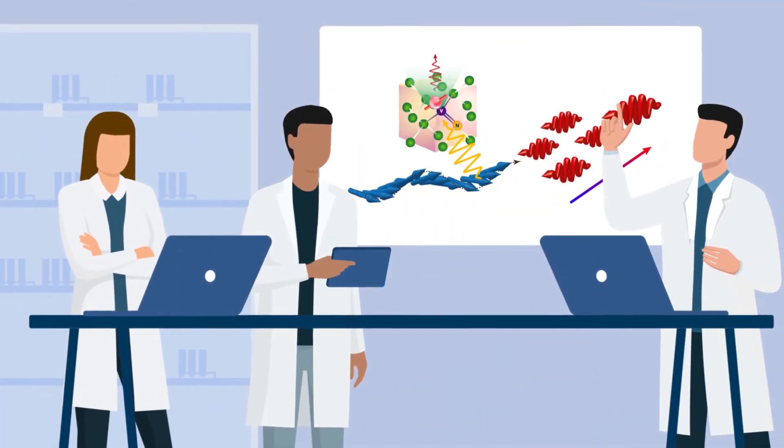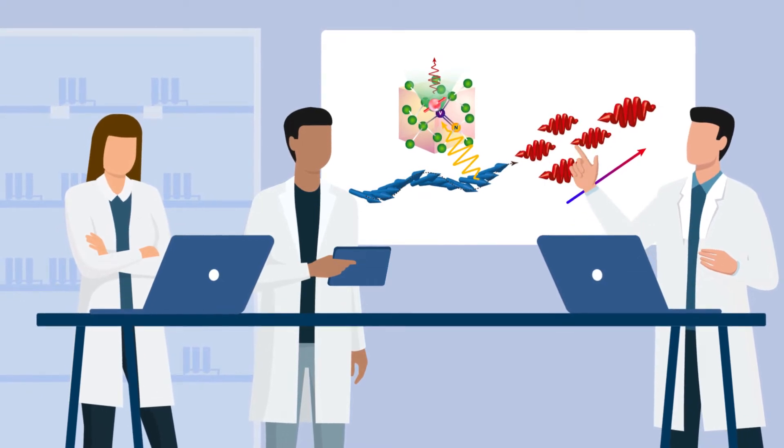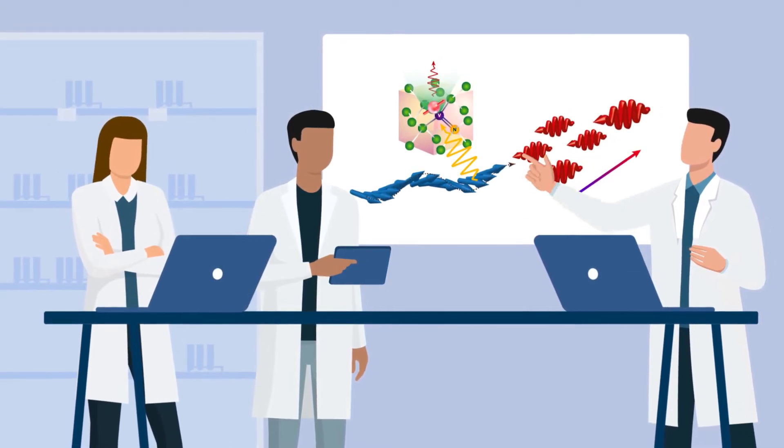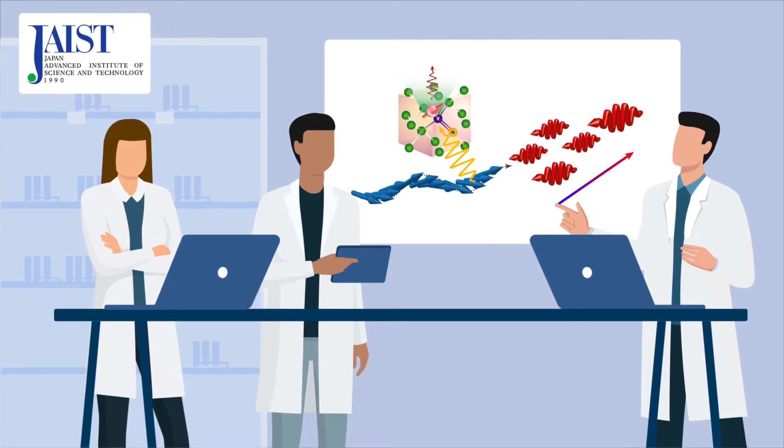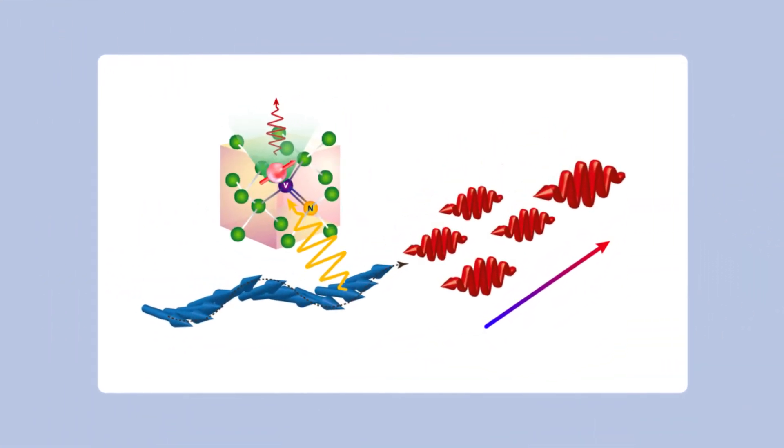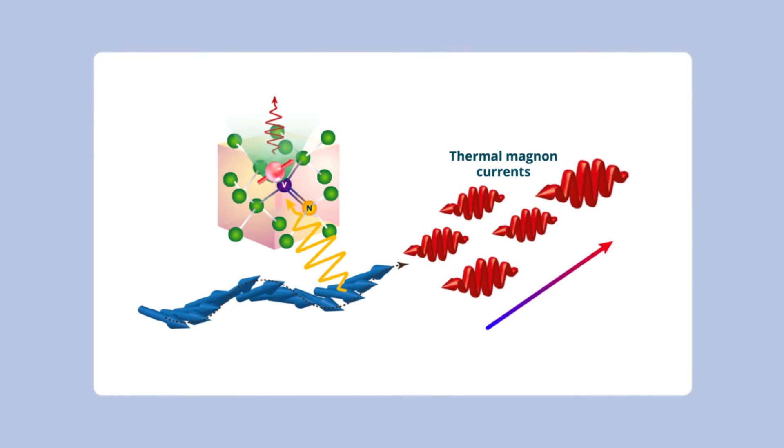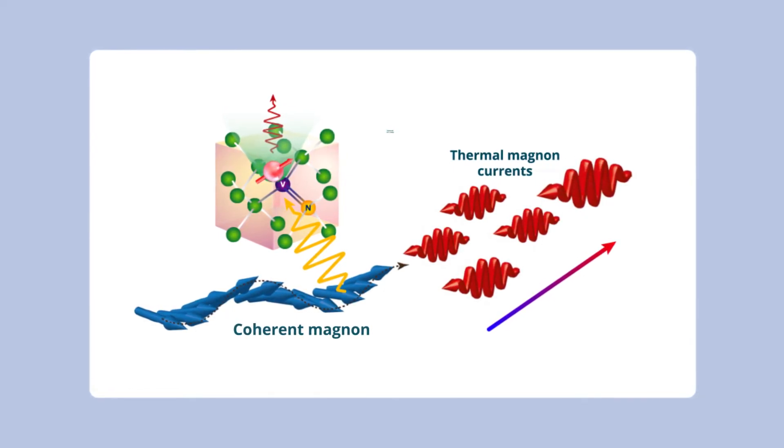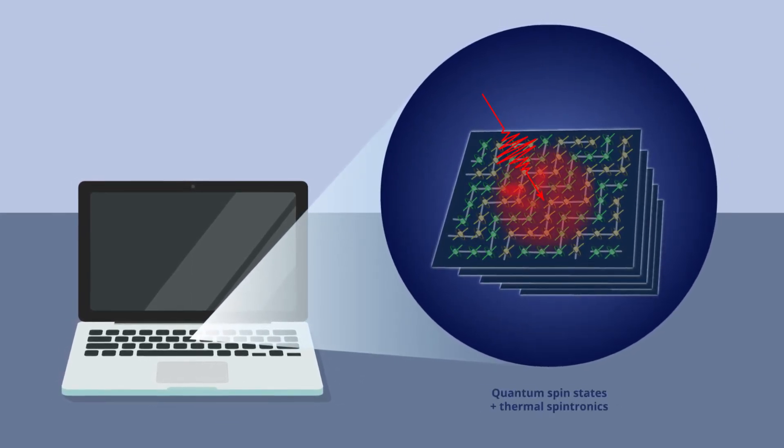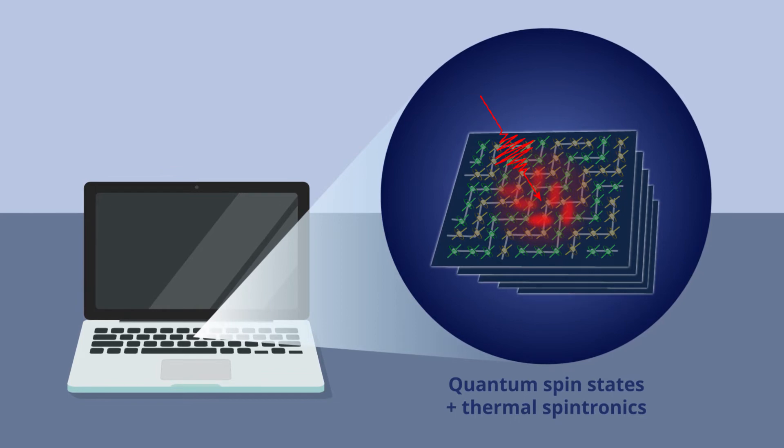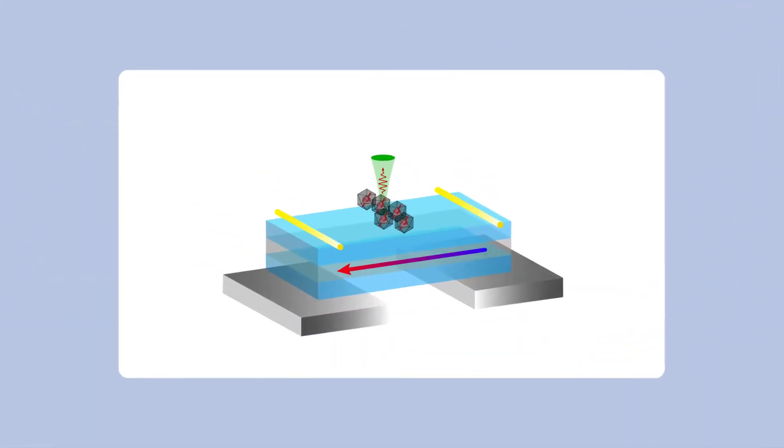Now, in a collaborative study, a team of researchers including Associate Professor Toshu An and Dwi Prananto from Japan Advanced Institute of Science and Technology have successfully measured thermal magnon currents mediated by coherent magnon with NV centers in diamond, paving the way for the realization of a hybrid system of quantum spin states and thermal spintronic devices.